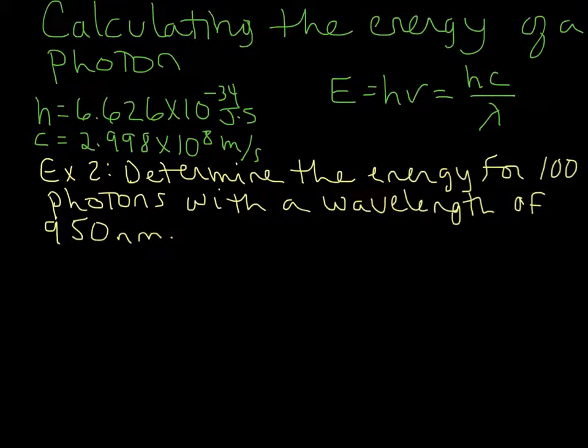Okay, so let's do another example calculating the energy of a photon as it relates to wavelength. Except this time we're going to put a little twist in it, and we're going to calculate the energy for 100 photons with a wavelength of 950 nanometers.